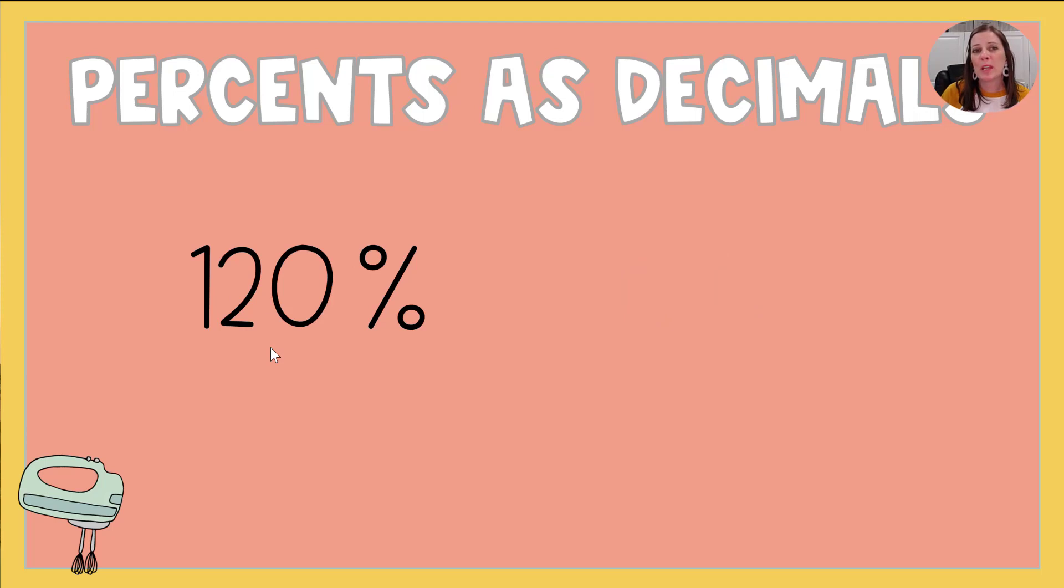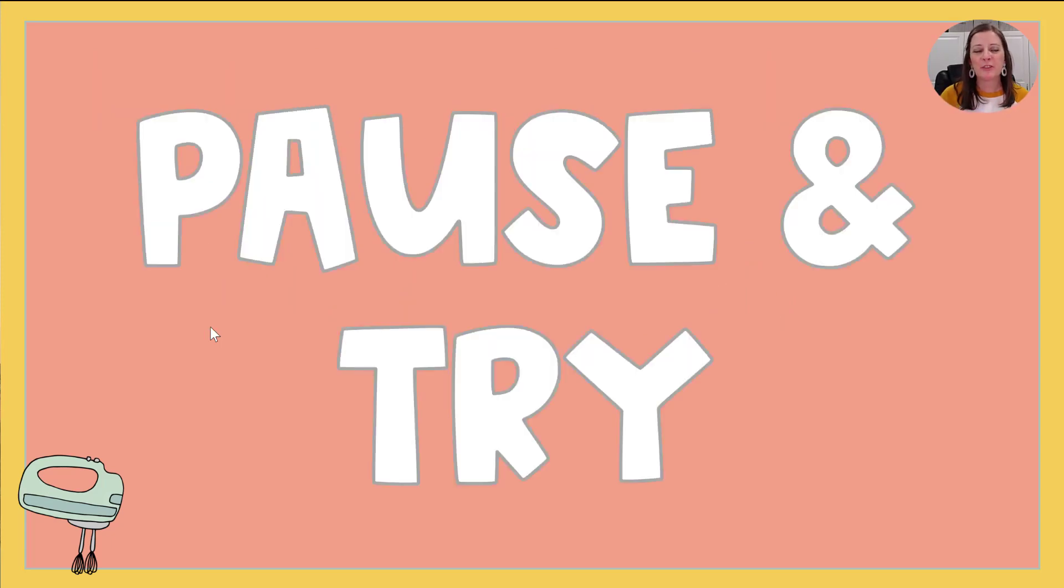All right. Last one is 120%. Again, if I've got that imaginary decimal and I move it two places, this is where we have a ones place. This one is 1.2 or 1.20. Pause the video. Try those next few on your own.